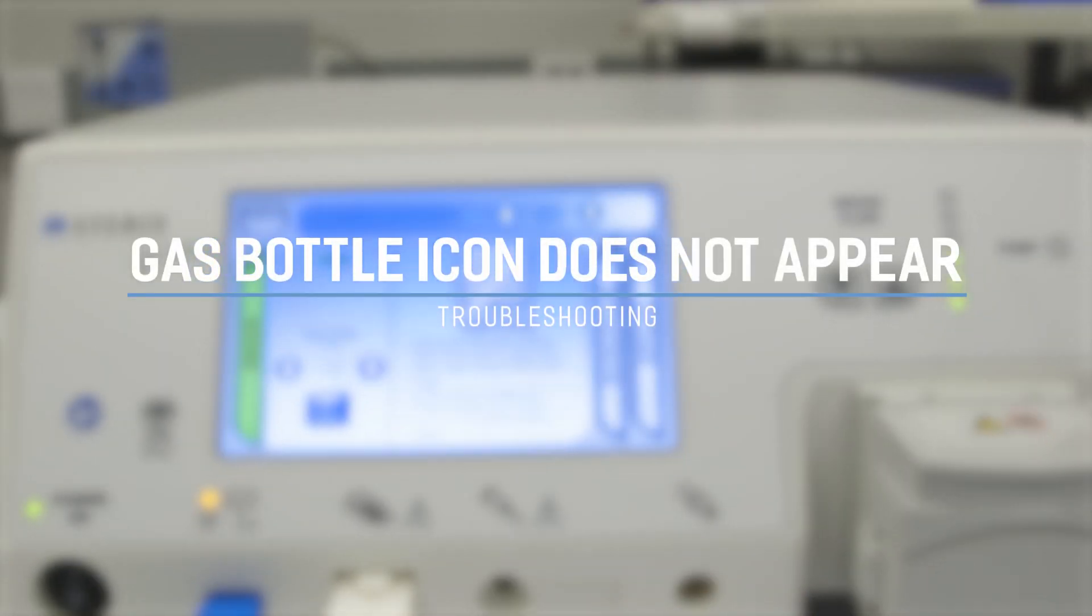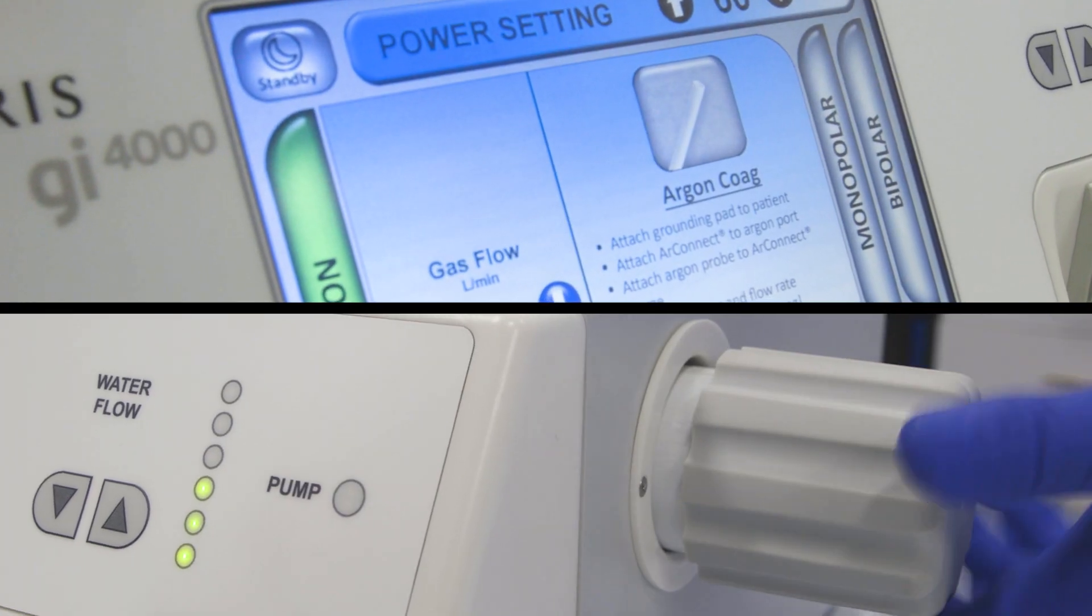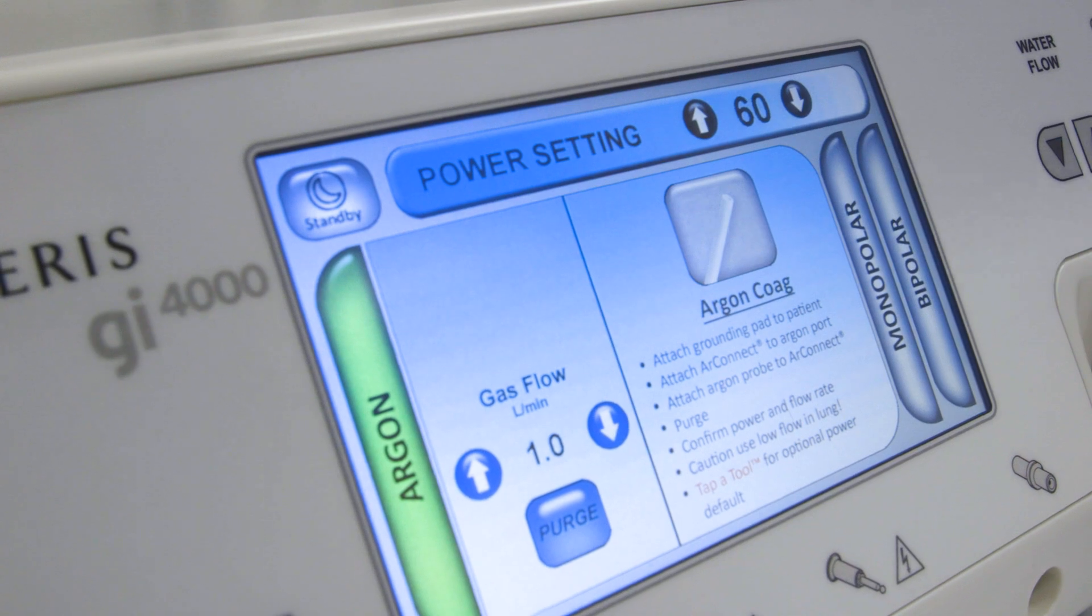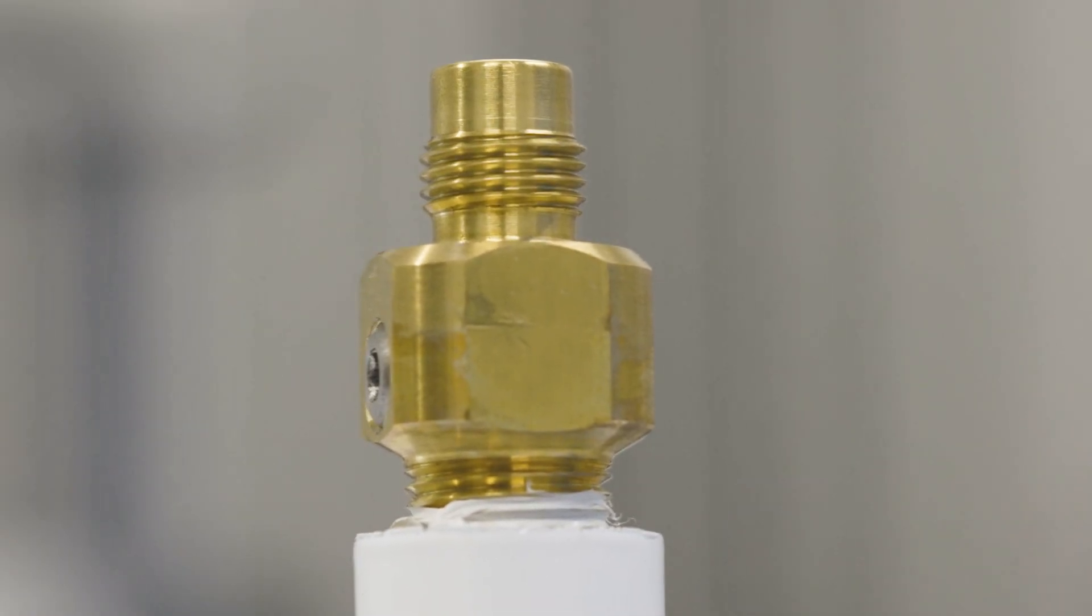Argon gas bottle icon does not appear. Continue turning the bottle clockwise until it is fully engaged. If the green gas bottle icon does not appear, inspect the brass threads for damage.